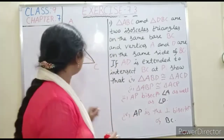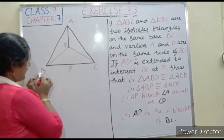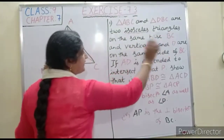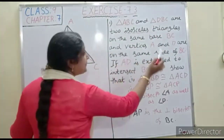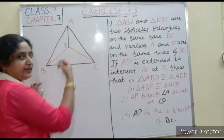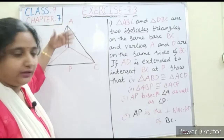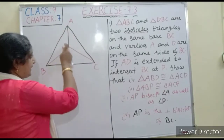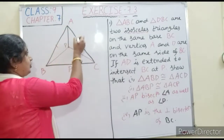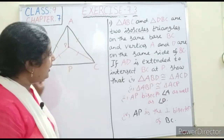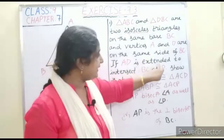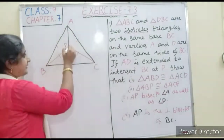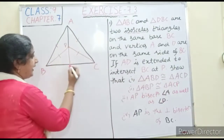This triangle ABC and triangle DBC are two isosceles triangles on the same base BC, and they are on the same side of BC. That means points A and D are lying on the same side of BC. Triangle ABC is isosceles and DBC is also isosceles, so these two sides are equal and these two sides are also equal. Then AD is extended to intersect BC at point P.